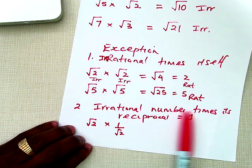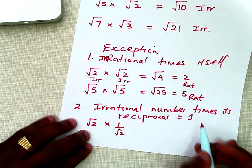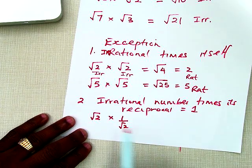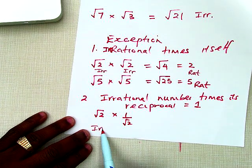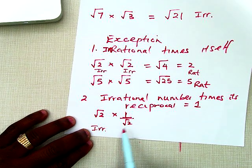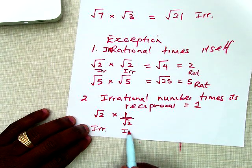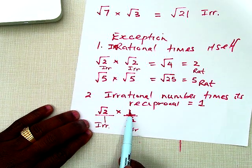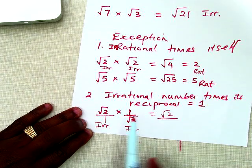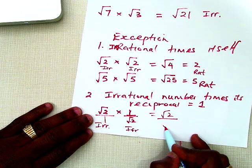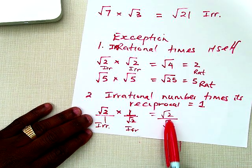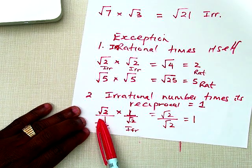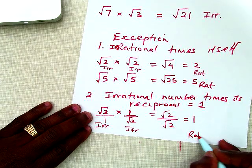If you multiply an irrational number by its reciprocal, you get 1, because any number times its reciprocal gives 1. For example, square root of 2 — which is irrational — multiplied by 1 divided by square root of 2 — also irrational — gives square root of 2 over square root of 2, which equals 1. So in this case, irrational times irrational gives a rational number.